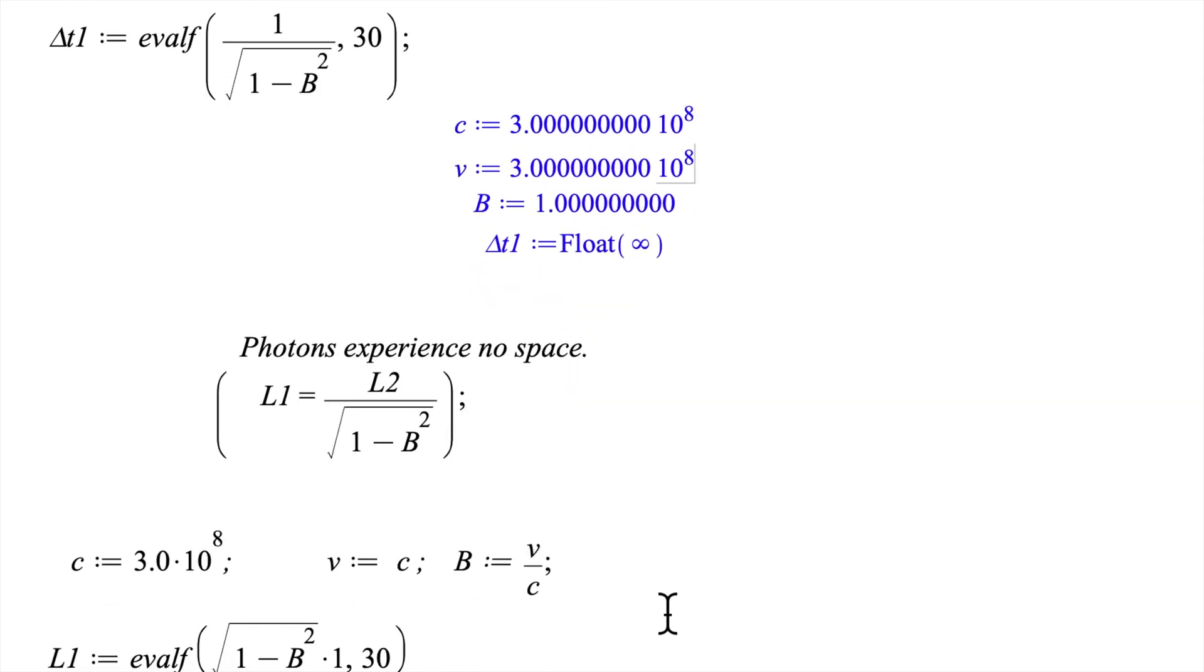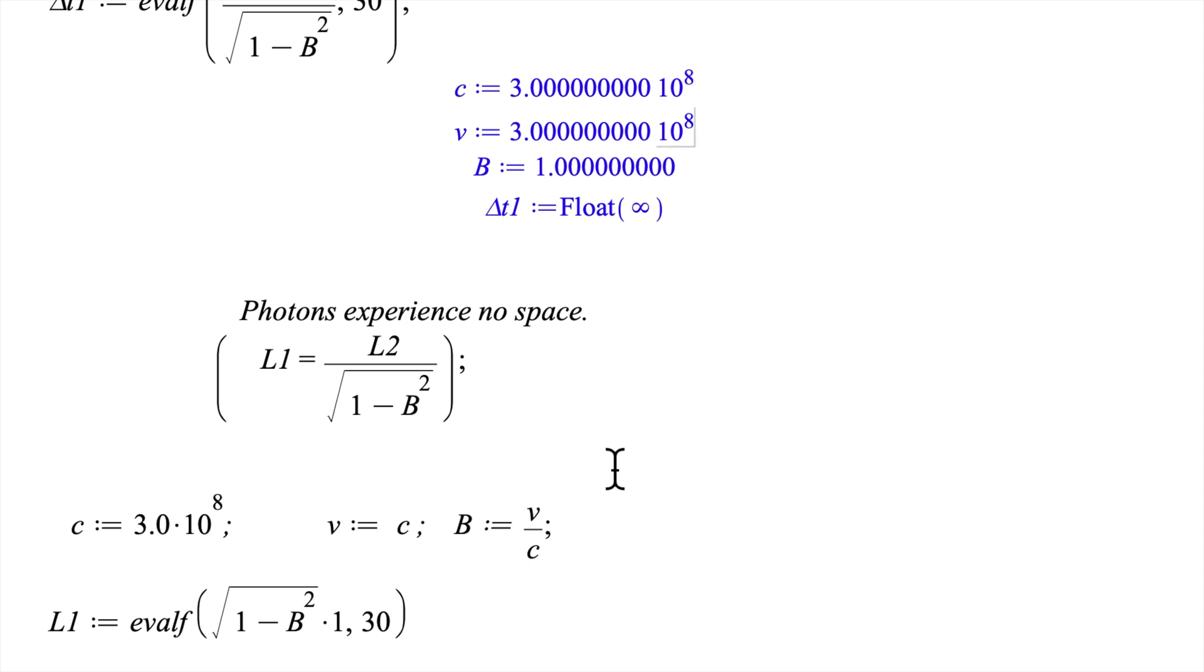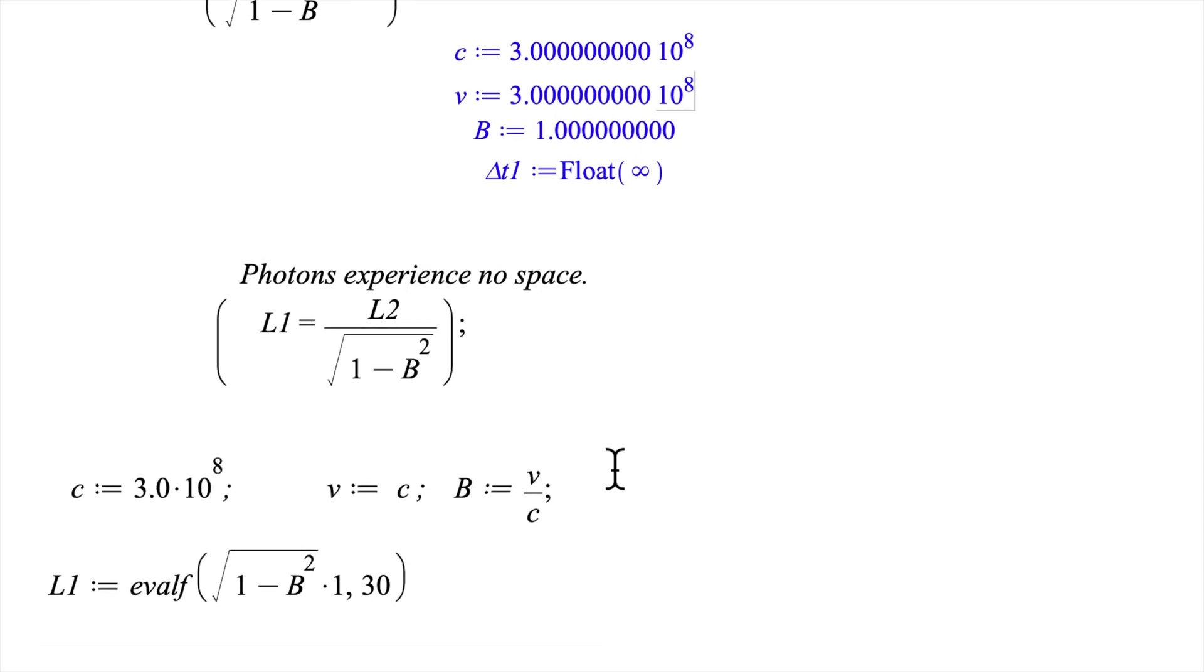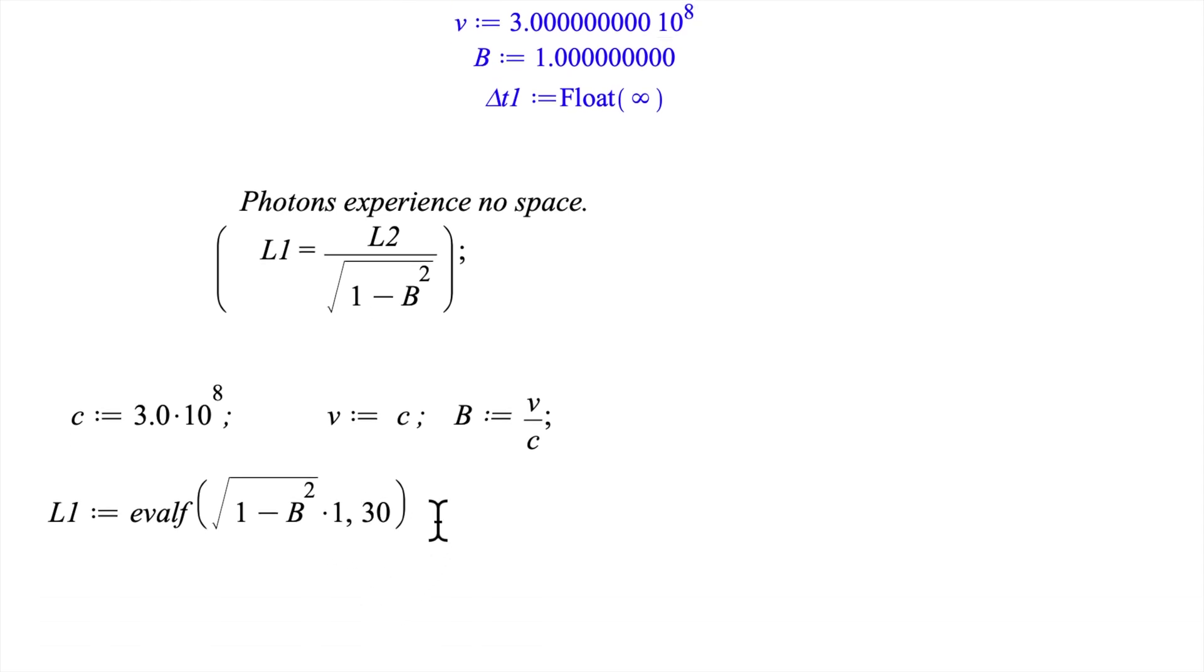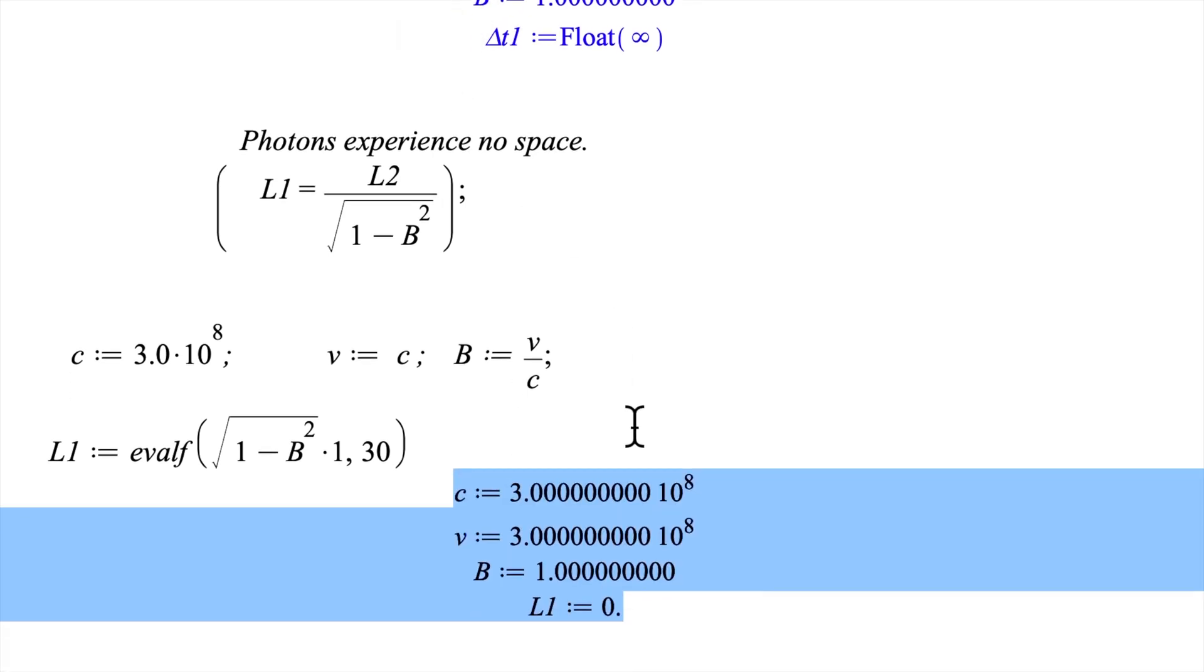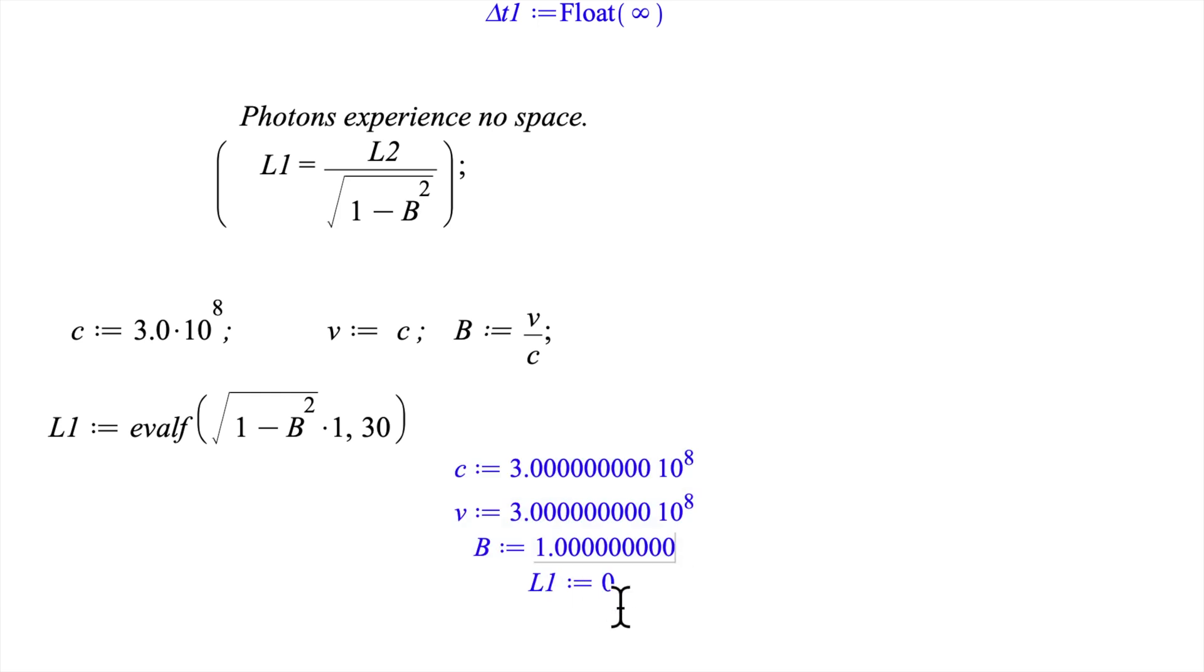Photons experience no space. It's the same idea. If the speed of the photon is equal to c, then this becomes 1, and you have 1 minus 1 equal to 0. 0 times whatever is equal to 0, so length equals 0. There is no space, there is no length for light.